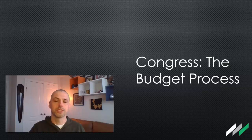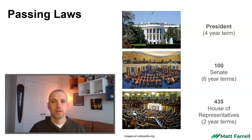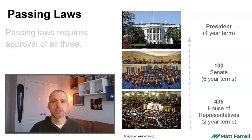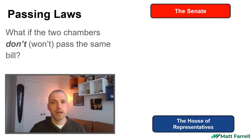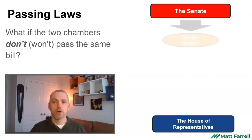In this video we're going to look at the budgeting process in Congress. The legislative process in America has several discrete steps. Any piece of legislation must pass through the House and the Senate before getting signed into law by the President. However, what happens when the two chambers do not pass the same law? How does that work?